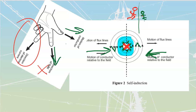Inductors come by a bunch of different names: reactors, chokes, and inductors are all terms used to describe these. Generally speaking, we use the term reactor in motor control applications, chokes when dealing with electronics, and inductors when dealing with AC — but they're all the exact same thing. It's just different sectors of the industry that have taken to using different names.